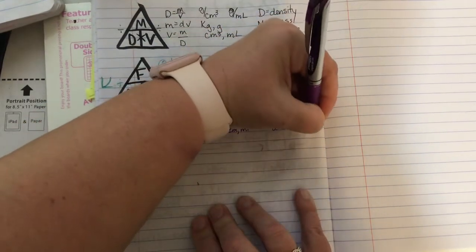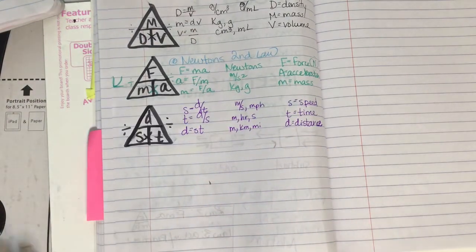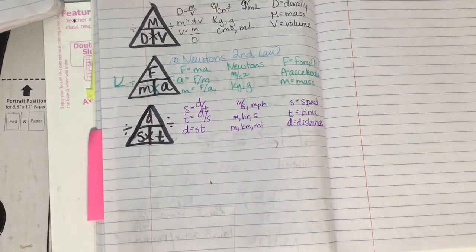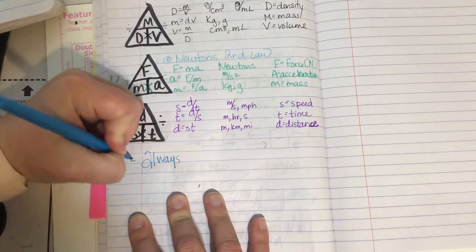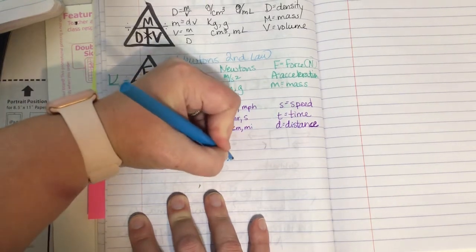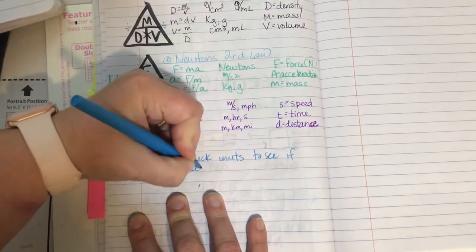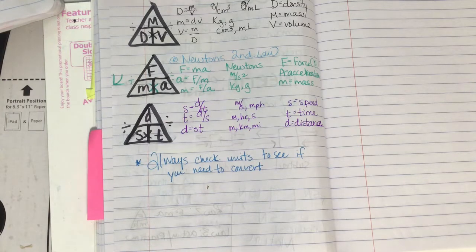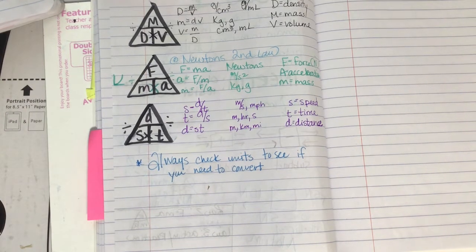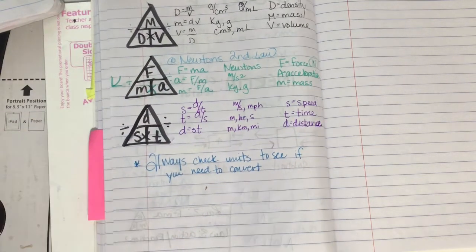So as you see, these three triangles, I can solve for any variable within those triangles. However, as I showed you when we were looking at some speed calculation, you always must check your units. So always check units to see if you need to convert. If my answer is in miles per hour and my units are given to me in meters per second, then obviously I need to convert my units before I can do my math. You've always got to pay attention to that. So this is a wrap up kind of of our three triangles that we've been using.